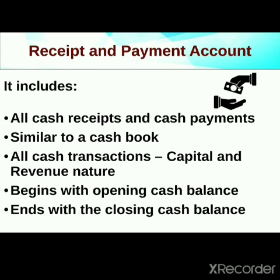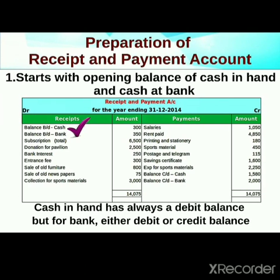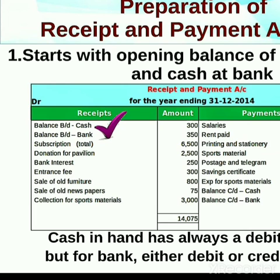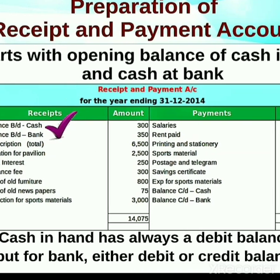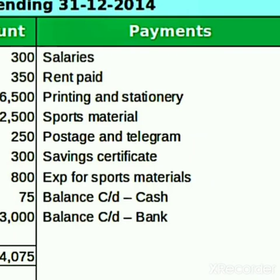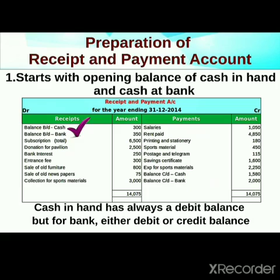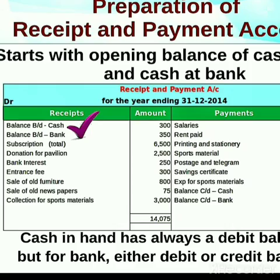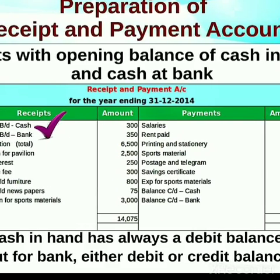When we start the receipt and payment account, we write the opening cash balance first, and when we close the account, we write the closing cash balance. You can see this format — balance brought down is the opening cash balance and balance carried down is the closing cash balance. Receipts are on the debit side and payments are on the credit side.